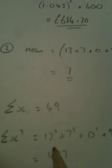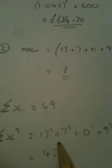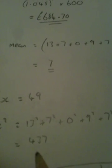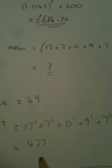Sum of x squared is the values squared all added together: 13 squared add 7 squared add 0 squared add 9 squared add 7 squared, etc. Just let the calculator do it—that's 437.